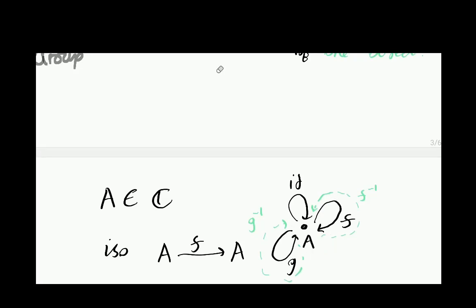We can compose these arrows in the normal way, and that corresponds to what group theorists call multiplying the elements of the group. For example, we might have automorphisms F and G, and we can consider what happens when we multiply them - so we could think of G after F. That's really just a composition of arrows. We can think of F as a member of this group and G as a member of this group, and G after F is the multiplication of those two elements. Sometimes people might write it as G∘F or even G plus F.